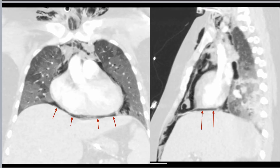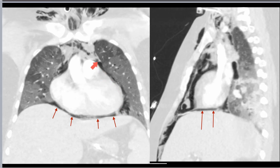The CT study of the same patient shows very nicely why you get the continuous diaphragm sign — it's due to the interposition of gas between the heart and the diaphragm. You can also see it tracking up into the superior mediastinum and into the neck.